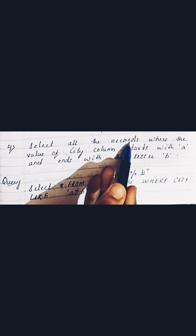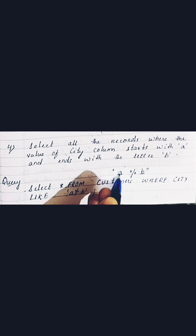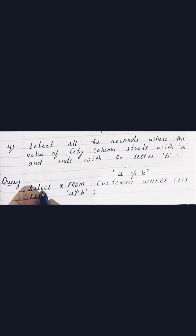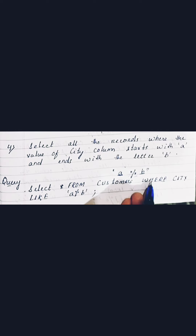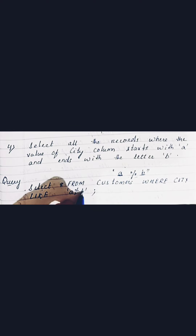Moving to the fourth question: select all the records where the value of the city column starts with 'A' and ends with the letter 'B'. The starting letter is 'A', the ending letter is 'B', and between them any number of letters can appear — that's why we use the percent sign. The query is: SELECT * FROM customers WHERE city LIKE 'A%B'.